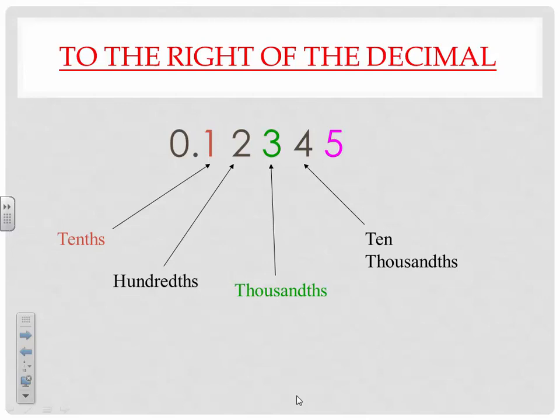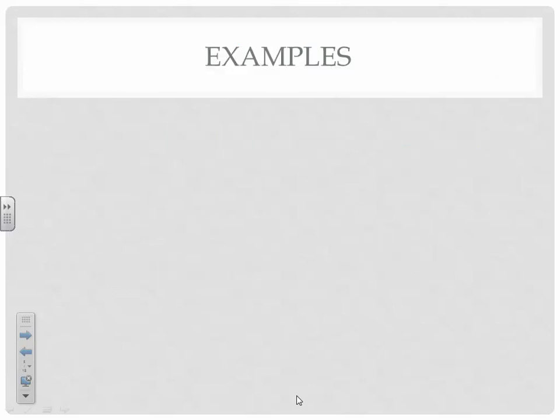If you wanted to go farther than that, the five is actually in the hundred thousandths — you don't need to know that, but kids always seem to ask. You can pause and catch up if you need to. Let's try a couple: if you had to write twenty-five hundredths, what would that look like? Pause and try it. Twenty-five hundredths looks like 0.25 — like 25 cents, twenty-five pennies out of a hundred.